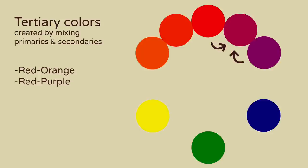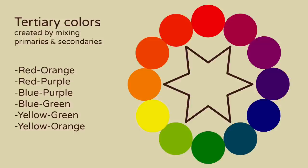Tertiary colors are created by mixing a primary color with a secondary color. These are red-orange, red-purple, blue-purple, blue-green, yellow-green, and yellow-orange.